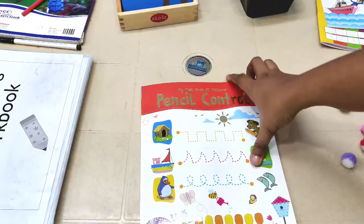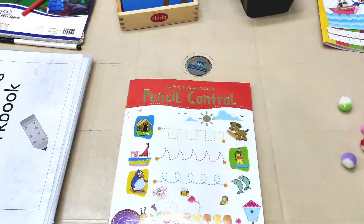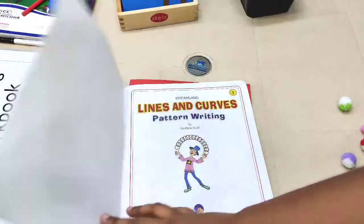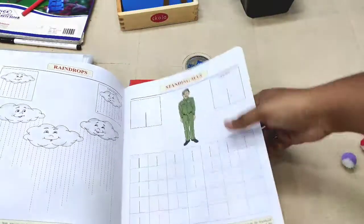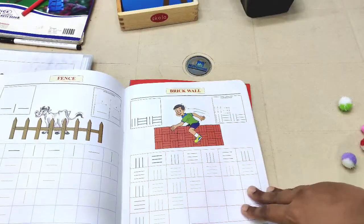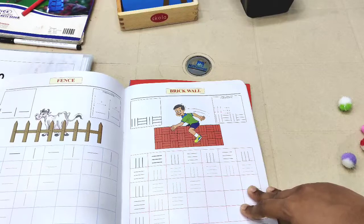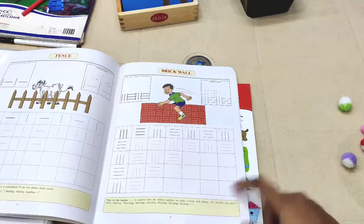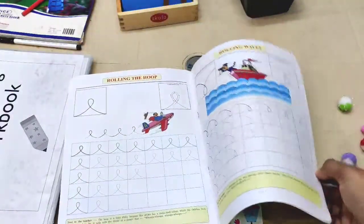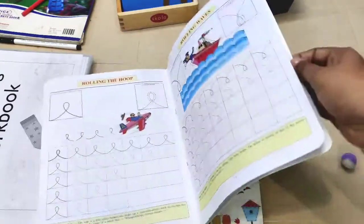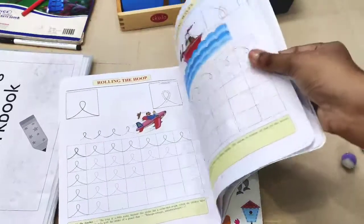Another book is the Lines and Curves from Dreamland. In this book it has boxes to help them get the perfect strokes. There are tips given below each page for children to learn faster with rhythm. It has all the strokes, spirals, waves, zigzags.